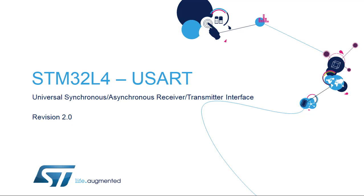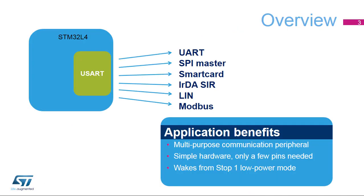Hello and welcome to this presentation of the STM32 Universal Synchronous-Asynchronous Receiver-Transmitter Interface. It covers the main features of this USART interface, which is widely used for serial communications in embedded systems. The USART is a very flexible serial module that supports multiple communication protocols.